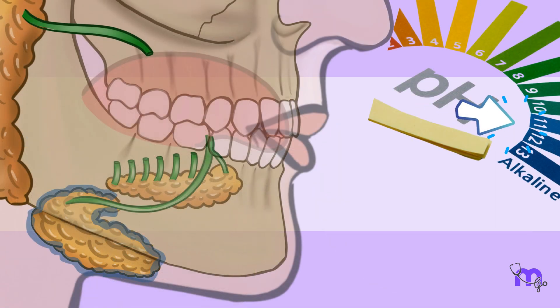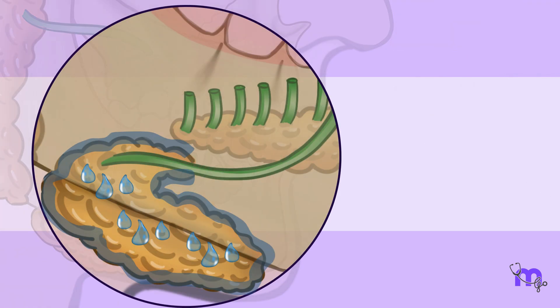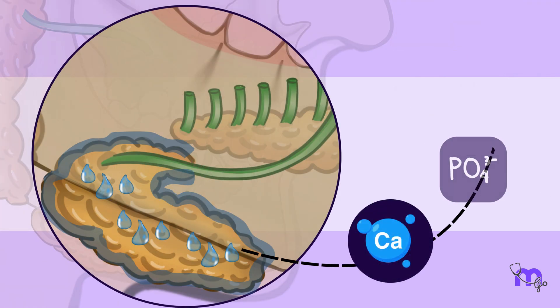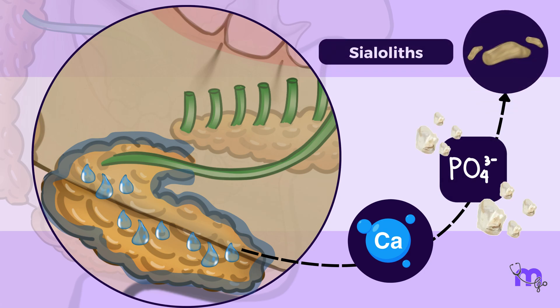This thicker saliva flows less easily and is more prone to stagnation. The submandibular gland also secretes more alkaline saliva. This alkaline environment makes it easier for minerals like calcium and phosphate to form crystals, which eventually become sialoliths.